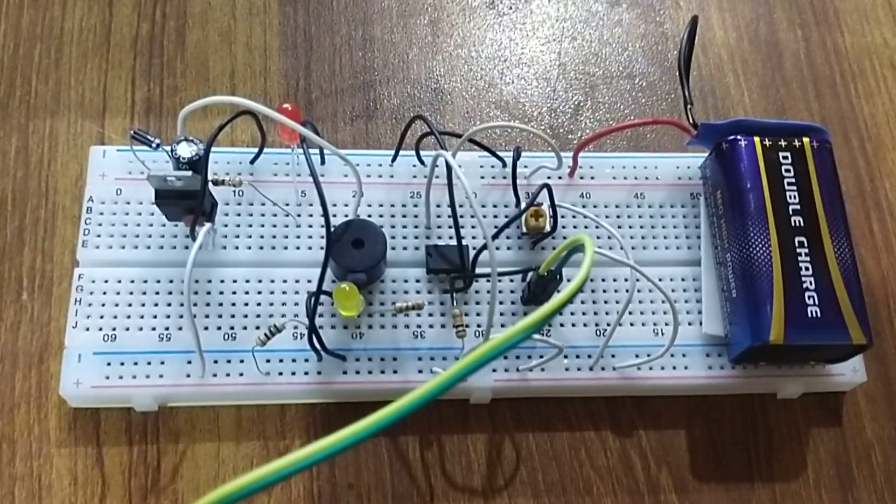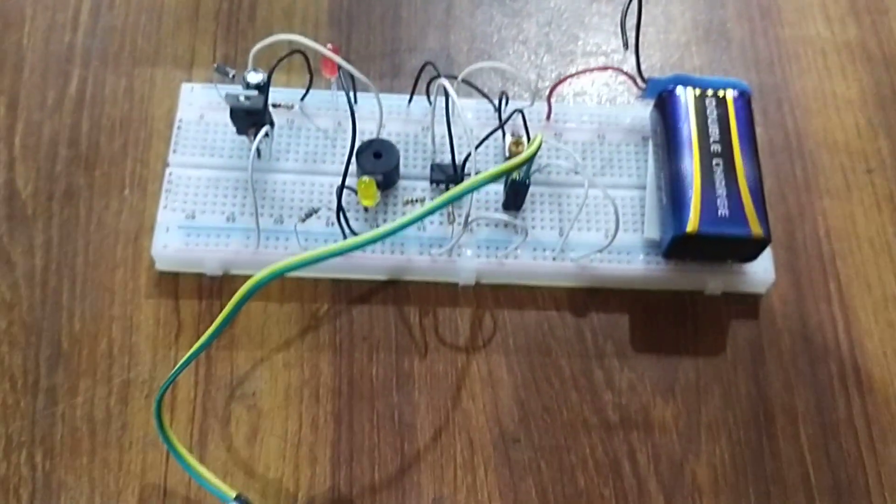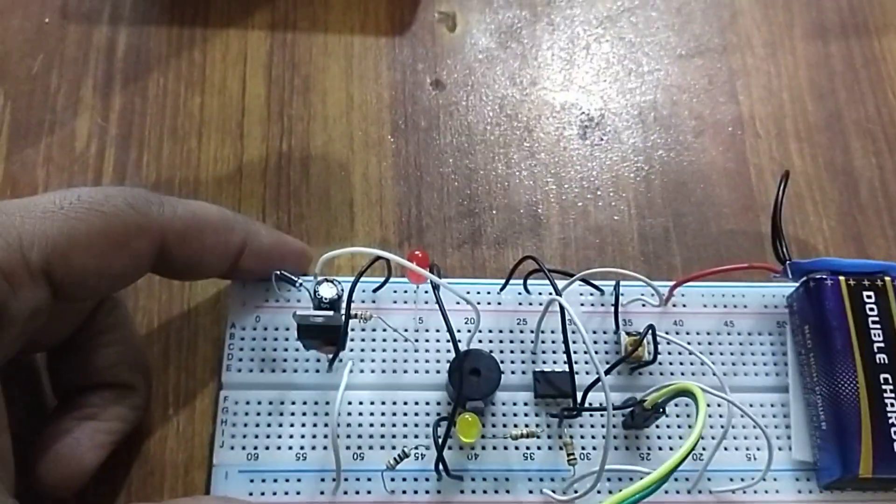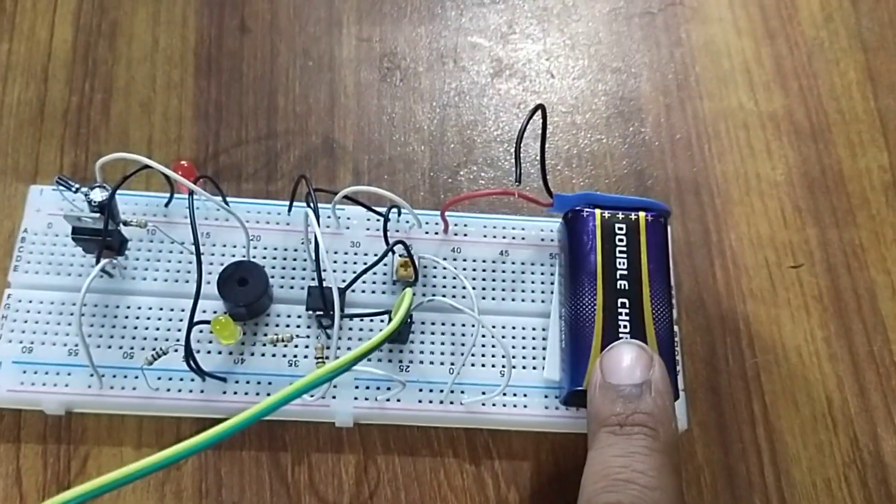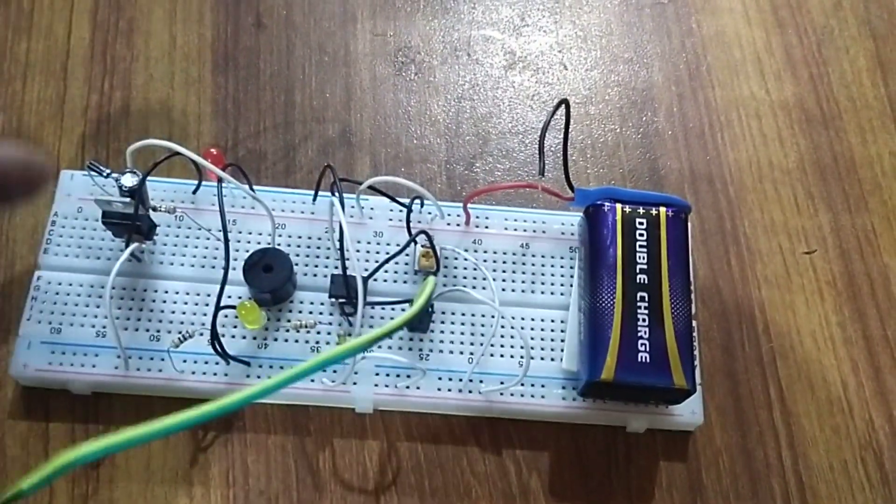Hello guys, how are you? Today I will discuss this project with you. This is a soil moisture detection system circuit. We use a 7805 regulator because we use a 9-volt battery and need to convert 9 volts to 5 volts for this purpose.